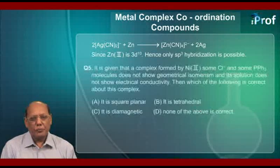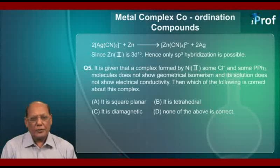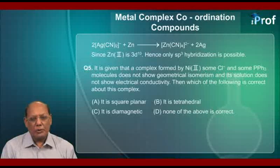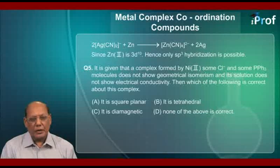Question number five. It is given that a complex formed by nickel(II), some chloride ions, and some triphenylphosphine molecules does not show geometrical isomerism, and its solution does not show electrical conductivity. Which of the following is correct? Option A: it is square planar. Option B: it is tetrahedral. Option C: it is diamagnetic. Option D: none of the above is correct.